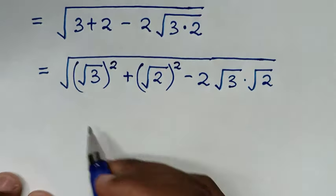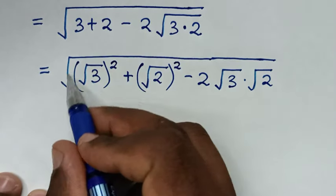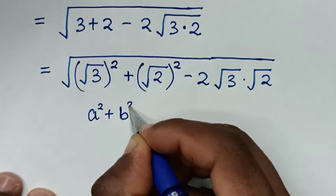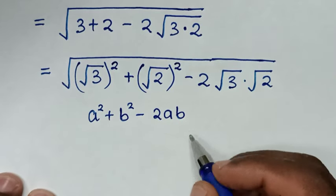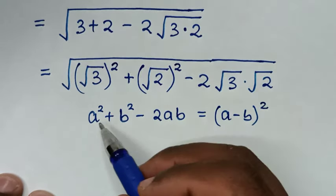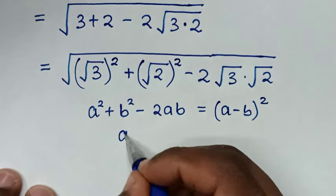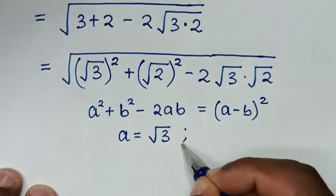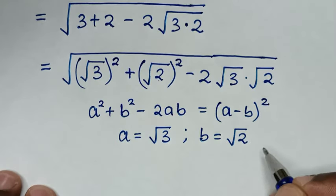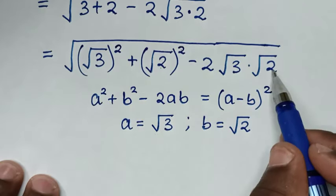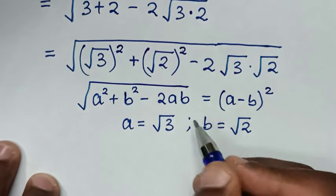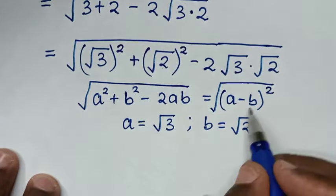Then, in the next step — now, this expression under the square root is in the form of a² + b² − 2ab, which is equal to (a − b)². Comparing: a² with (√3)² gives a = √3, and b² with (√2)² gives b = √2. Because this expression is under a square root, we will place all of them under the square root and apply this form.